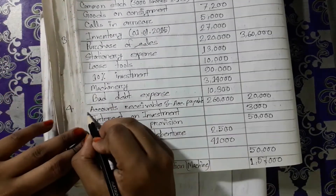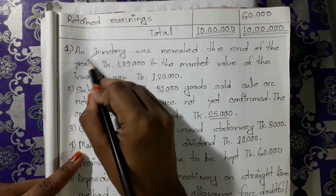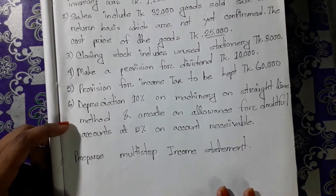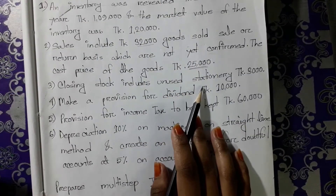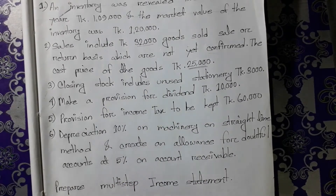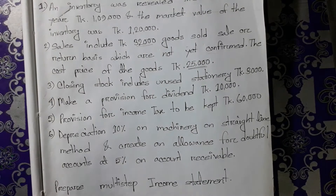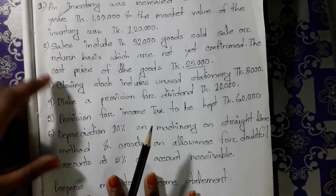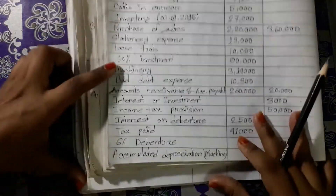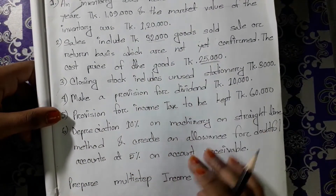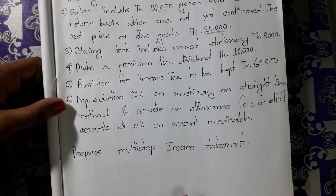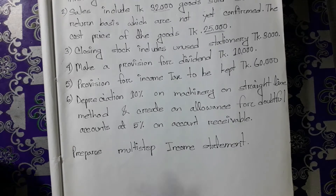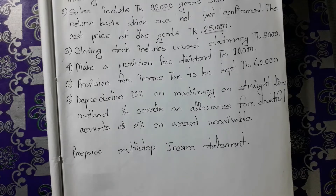We have accounts receivable, and we have to mark the ending inventory. We have three questions. Closing stock includes unused stationery of 3,000. So we have to account for the closing stock, which is the ending inventory of 3,000. We also have to account for the taxation provision of 50,000.